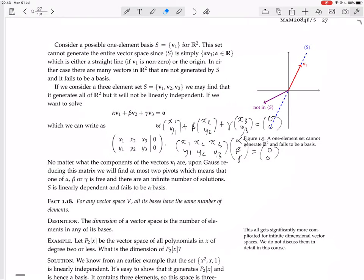Okay, so this means then, this sort of argument shows that for any vector space V, all its bases have the same number of elements. The plural of basis is bases, so you're saying basis, but you can say bases. For any vector space V, all its bases have the same number of elements. Okay?